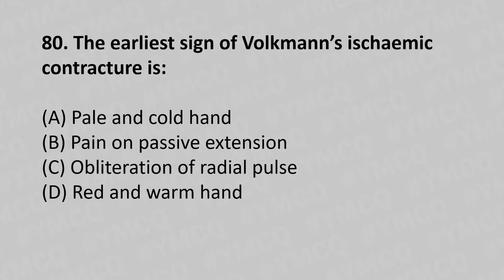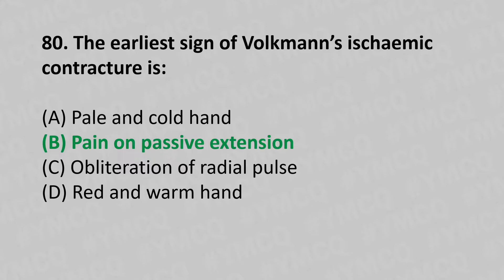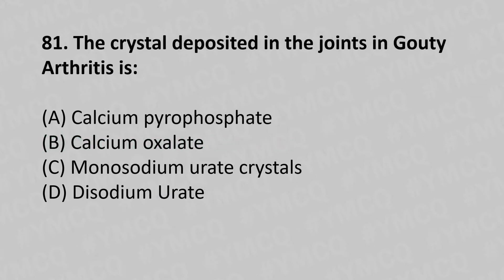Moving to our 80th question. The earliest sign of Volkmann's ischemic contracture is: option A pale and cold hand, option B pain on passive extension, option C obliteration of the radial pulse, option D red and warm hand. The answer is option B, pain on passive extension.